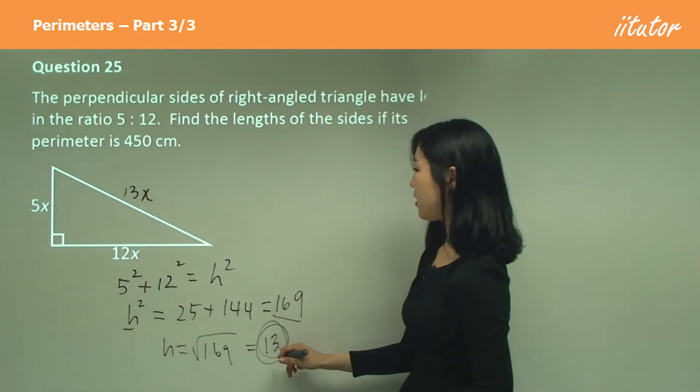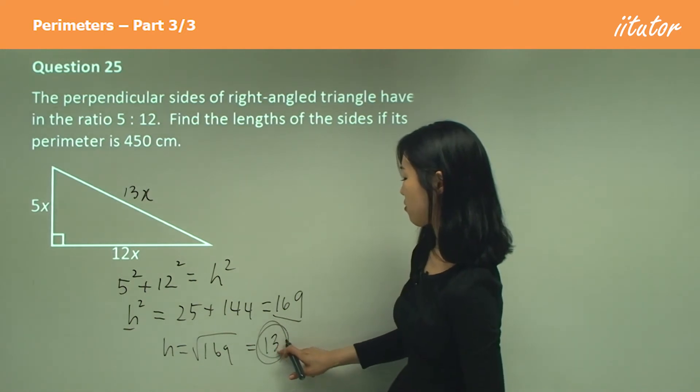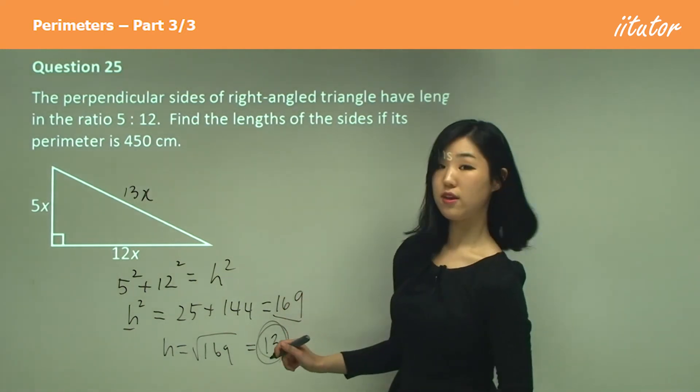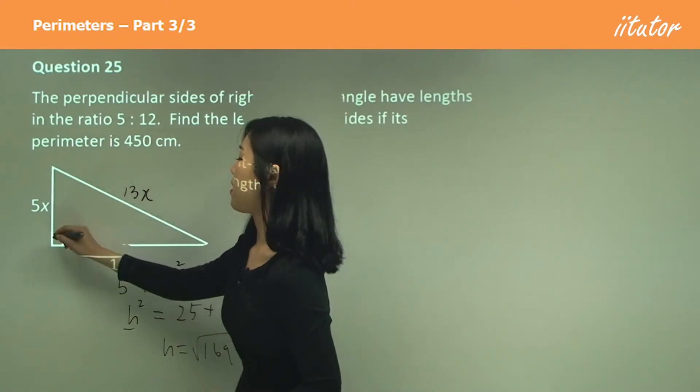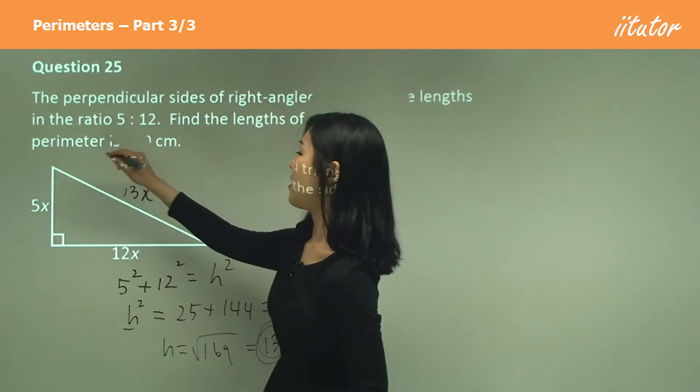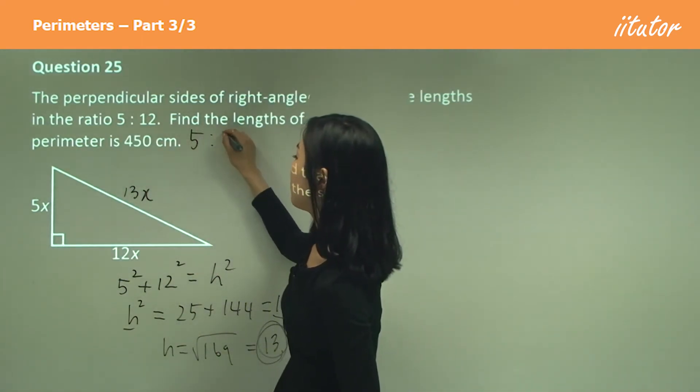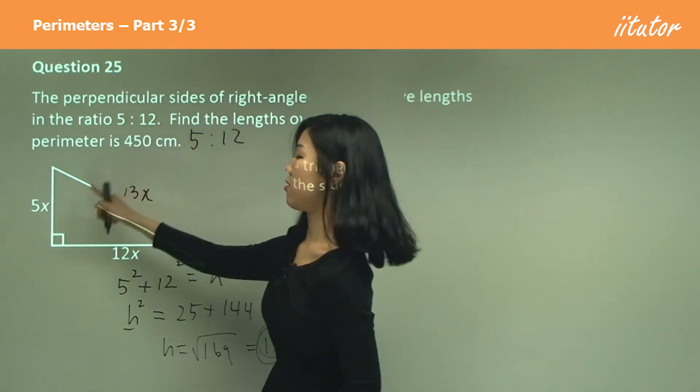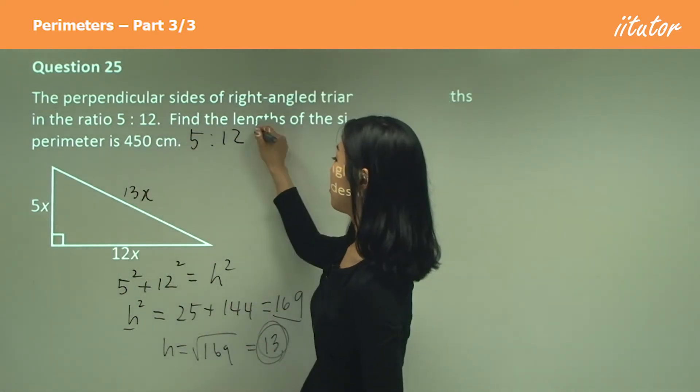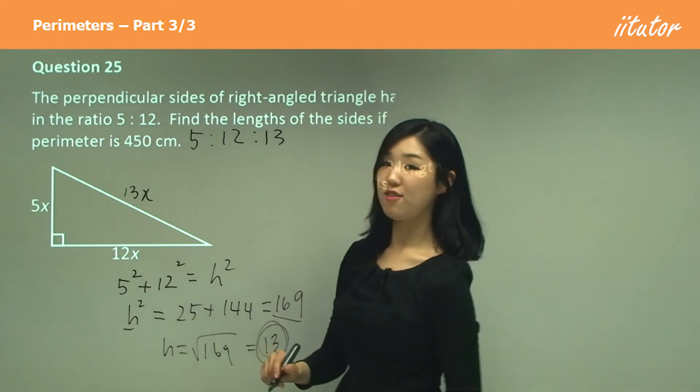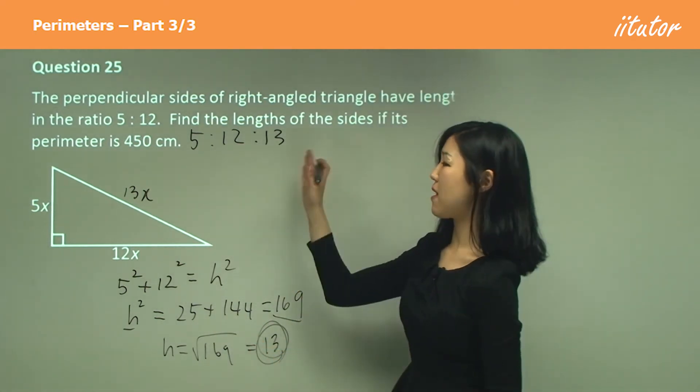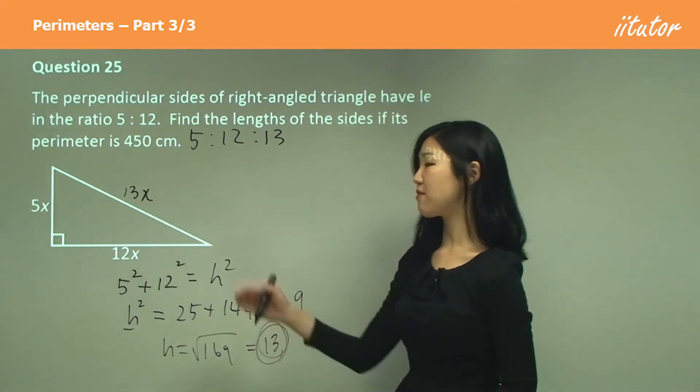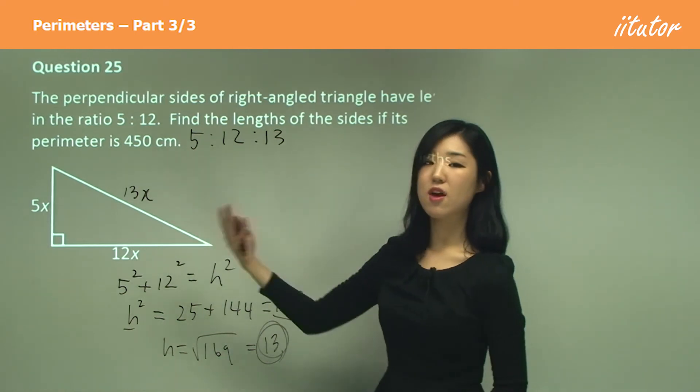This 13 indicates that this side to this side to this side is in the ratio 5 to 12 to 13, as given. Now we know the third side, so we can make that ratio. Therefore this is not 13, it must be 13x.